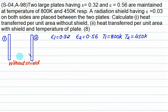We have plate number 1 and 2 without shield, epsilon 1 is 0.32, epsilon 2 is 0.56, T1 is 800 and T2 is 450. Q12 over A equals sigma T1 to the power 4 minus T2 to the power 4 upon 1 by epsilon 1 plus 1 by epsilon 2 minus 1 and area in numerator.